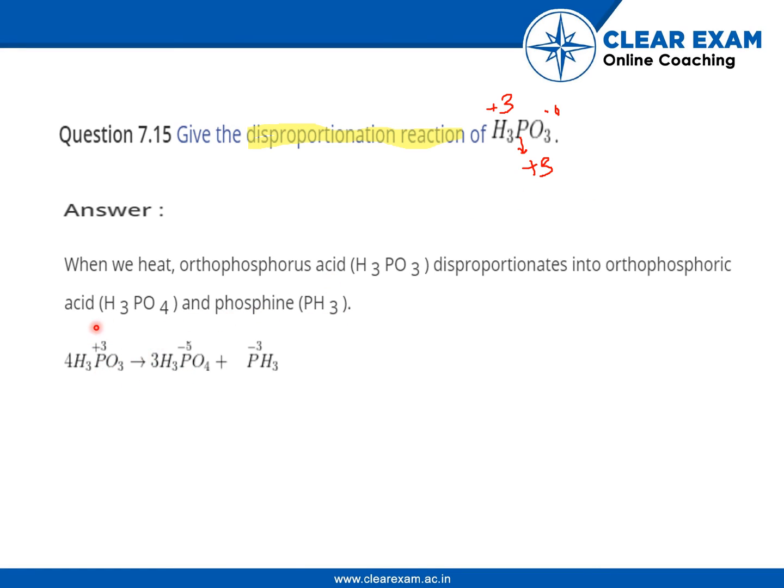Plus three is the oxidation state for H3PO3. For H3PO4 it will be plus five. As you can see, oxygen has minus eight, hydrogen has plus three, so the remaining plus five will be for the phosphorus atom.